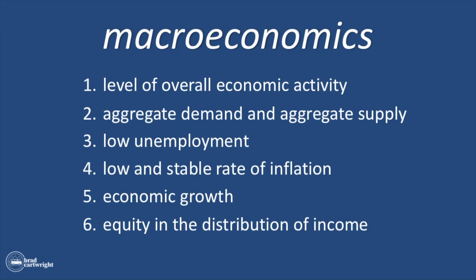A normal macroeconomic course of study would have six different units. The first is the level of overall economic activity — basically, how do we know how much economic activity is going on in a particular country? That is almost always measured by something called gross domestic product, or GDP. GDP is used regularly to figure out if the economy is growing, if it's shrinking, and if it is growing, how fast.